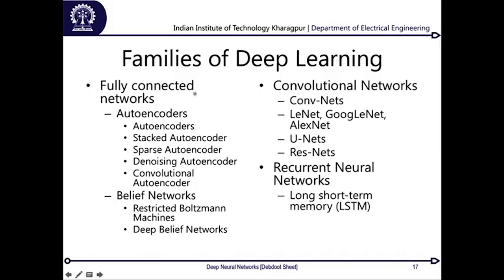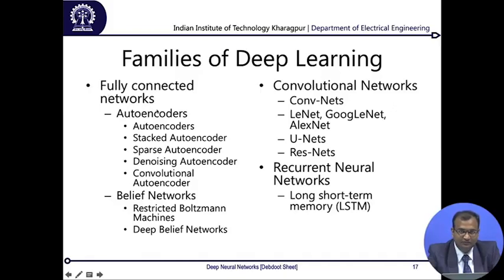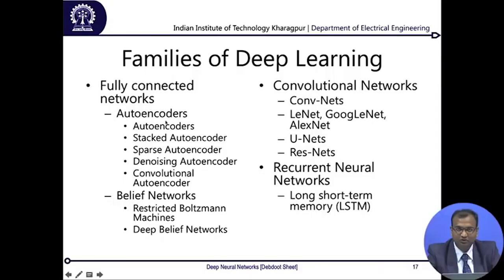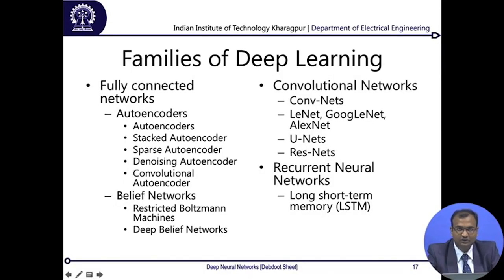In deep learning you have a family of learners. The first family is fully connected networks, similar to a multi-layer perceptron, where each neuron on any layer is connected to every single neuron on the subsequent layer. The first model is an autoencoder, which learns to encode and decode: you take an image patch, feed it through the network, and the output should reconstruct the same image patch. If I feed a 5×5 patch with an apple, I should see the same apple coming out. This is called an autoencoder.